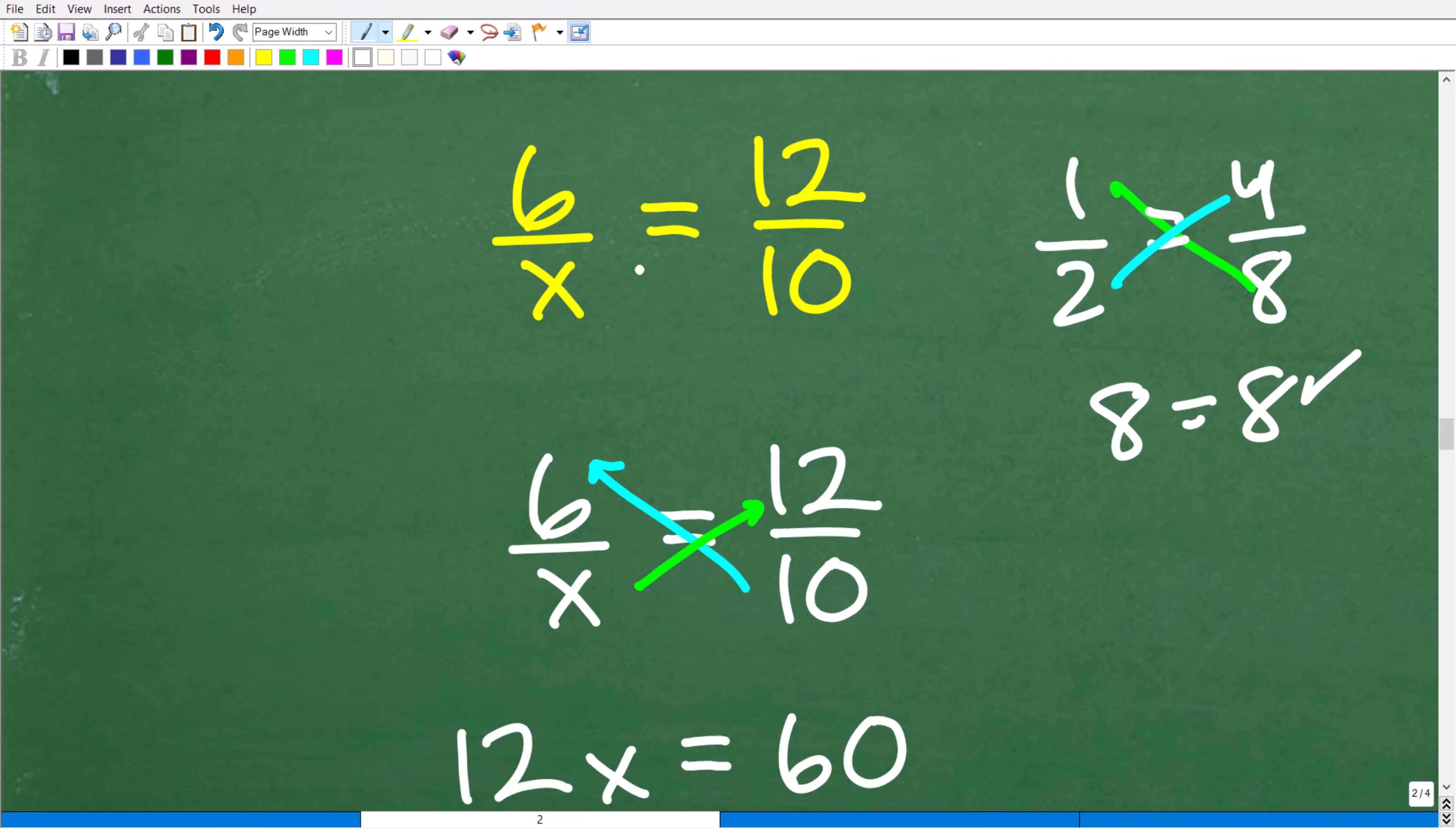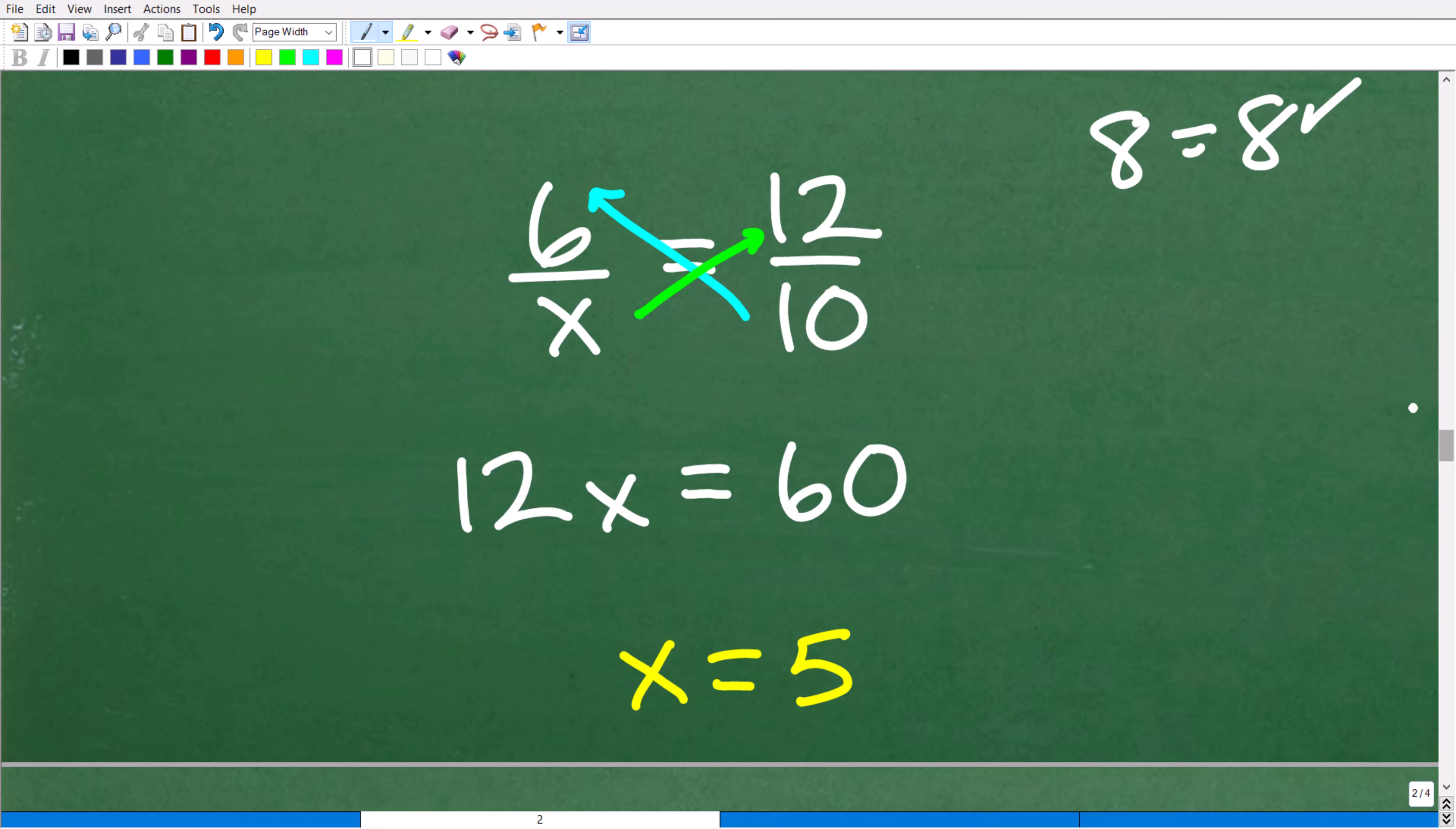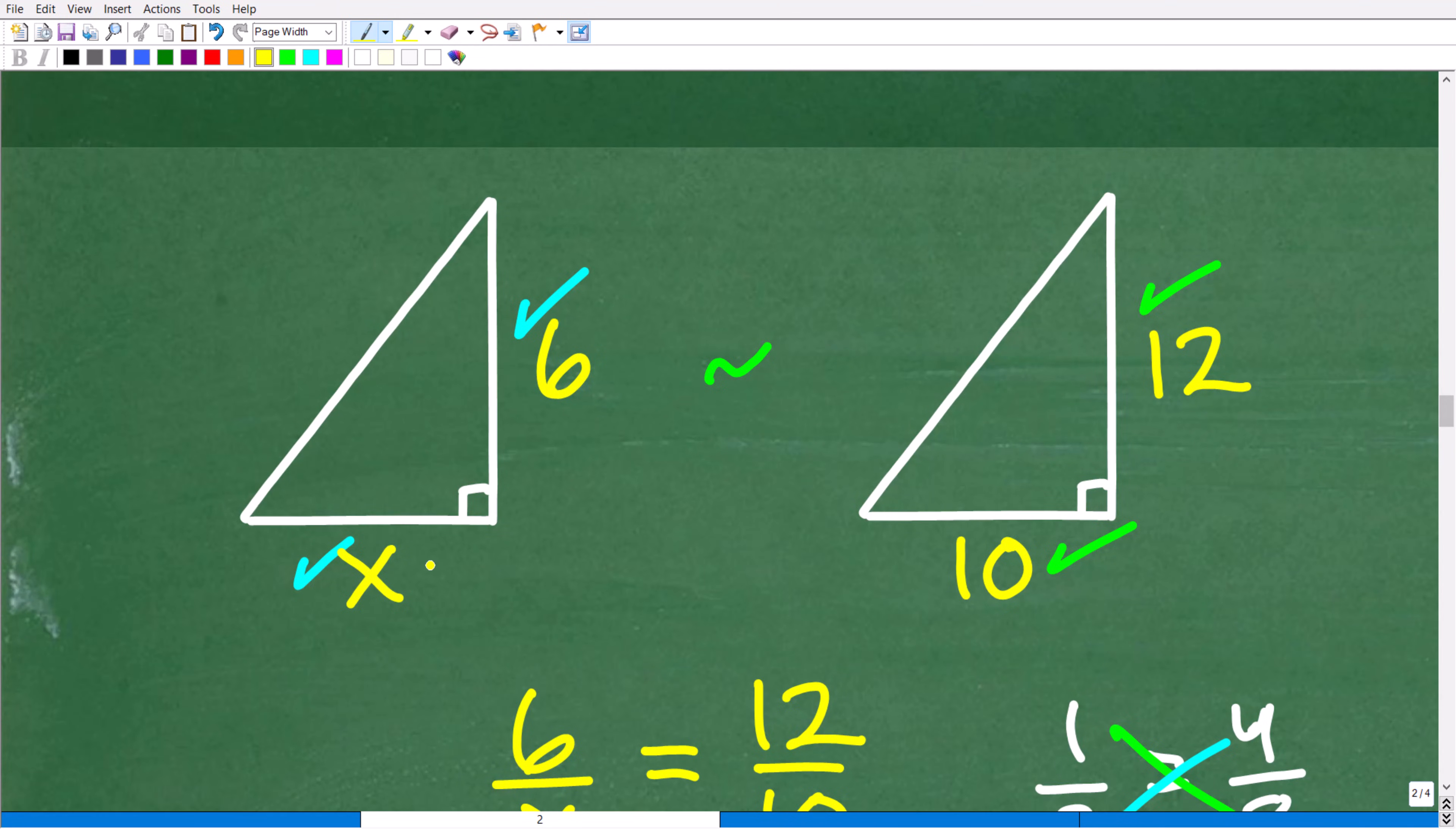Therefore, the cross product is equal. So I'm saying, hey, I got one fraction equal to another fraction. Let's go ahead and apply the cross product. So I'll have 12 times x, which of course would be 12x, and 6 times 10, which of course would be 60. And to solve for x, all I have to do is divide both sides of the equation by 12. 60 divided by 12 is 5. x is equal to 5. So that is the answer.